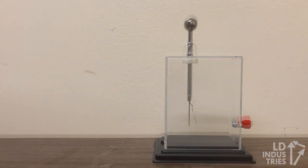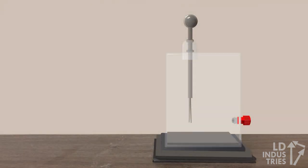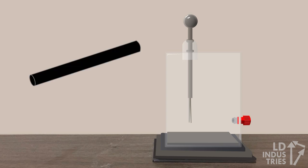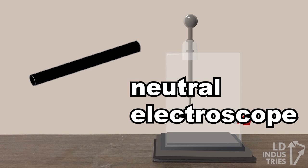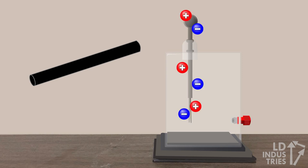We can explain this movement by considering some attractive and repulsive forces between electrons and protons in the electroscope and rod. The electroscope starts off being neutral, which isn't to say it doesn't have any charge, but rather that it has equal amounts of positive and negative charge. I'll show that by putting in equal amounts of protons and electrons here on the electroscope.